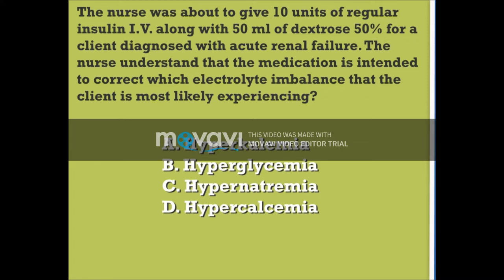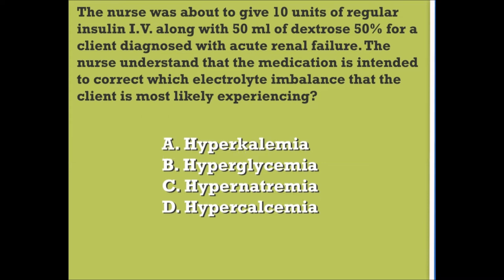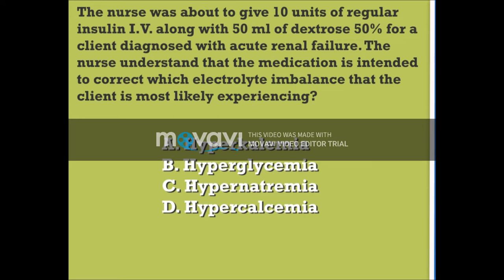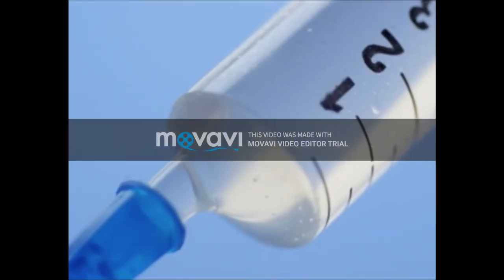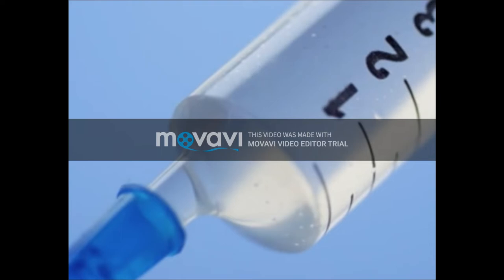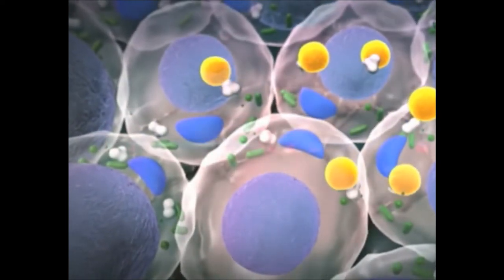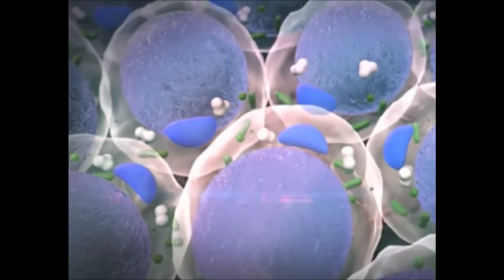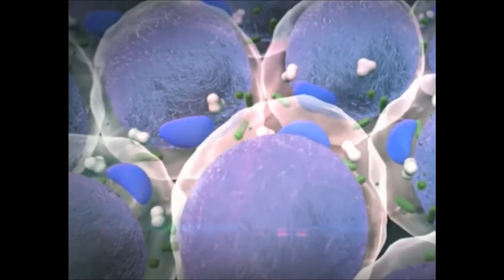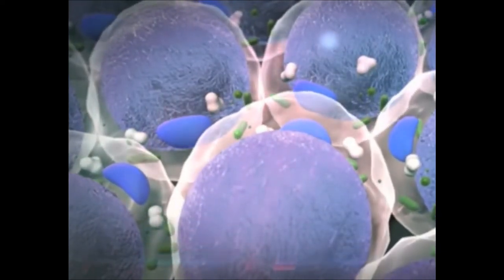Since the question is not giving us the exact values, it is asking us to recognize why these medications are normally given. In kidney failure, potassium levels in the blood may be increased because of the loss of ability by the kidneys to excrete the extra potassium out of the body. Regular insulin given intravenously with 50 mL of dextrose 50% helps shift the potassium from the extracellular fluid into the cell, which normalizes the serum potassium levels in your client with hyperkalemia.